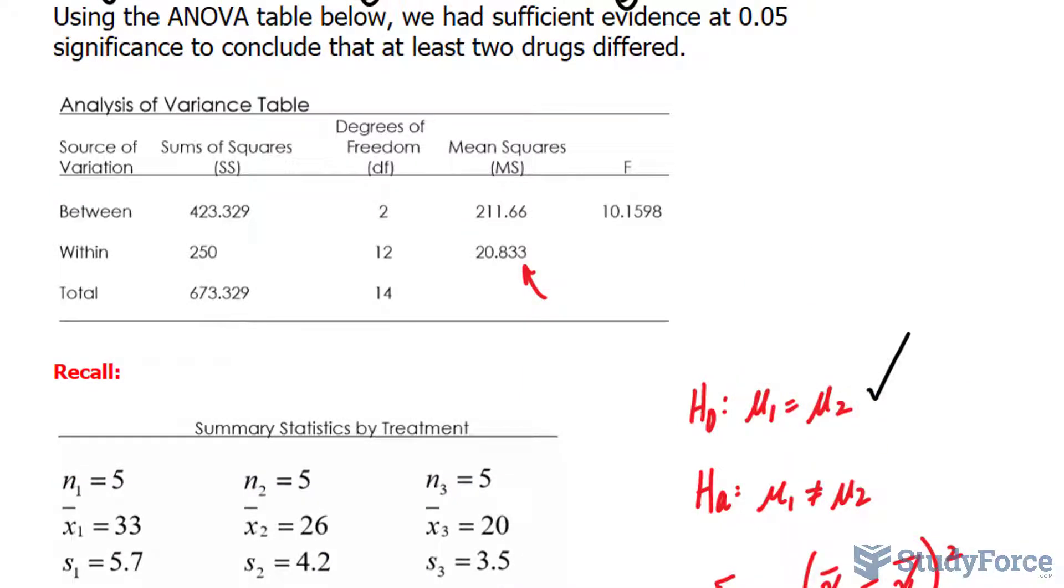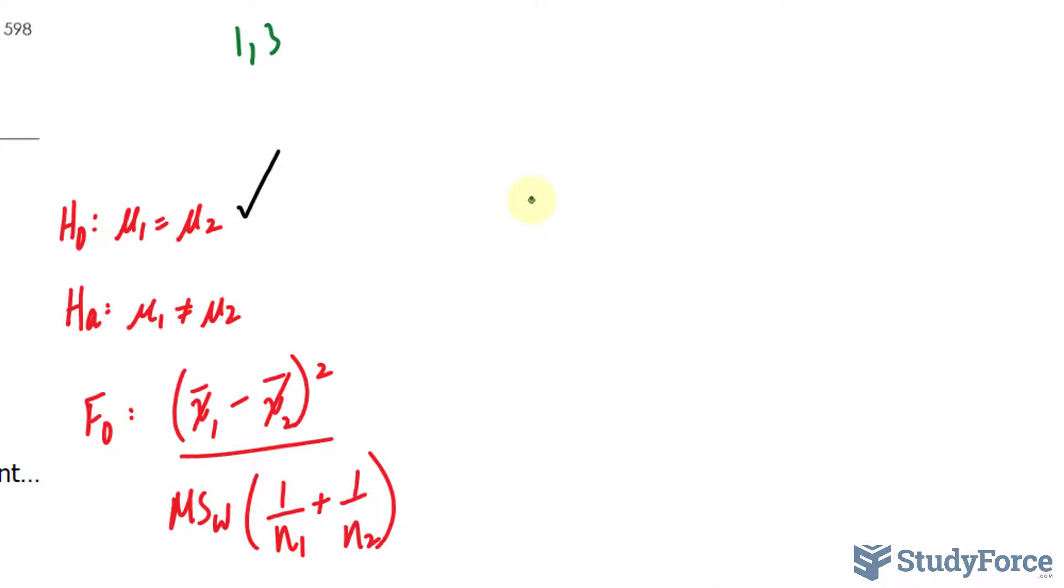Now we have to do the same thing for the next groups, which is 1 and 3. Let's do these calculations alongside what we just did here. So again, the null hypothesis will be μ₁ is equal to μ₃.